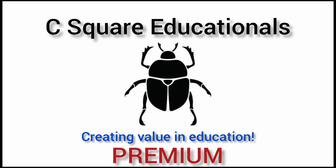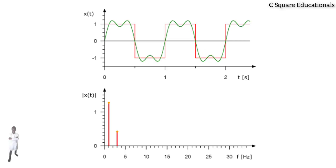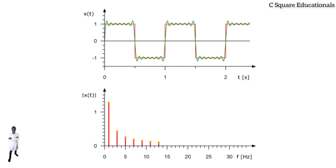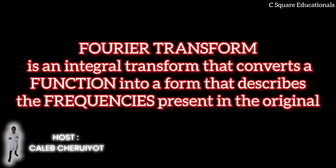This episode is brought to you by Cisco Educational Premium. Did you know that we can represent any function as a sum of sine and cosine waves? A Fourier transform is a mathematical transform that decomposes functions into frequency components, which are represented by the output of the transform as a function of frequency. Most commonly, functions of time and/or space are transformed, which will output a function depending on temporal frequency or spatial frequency, respectively.